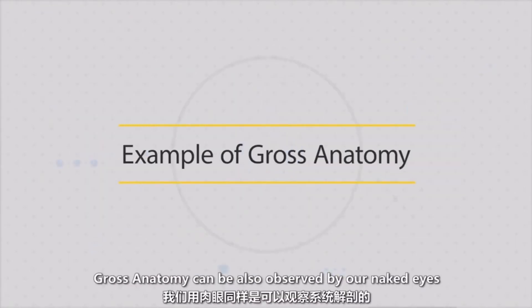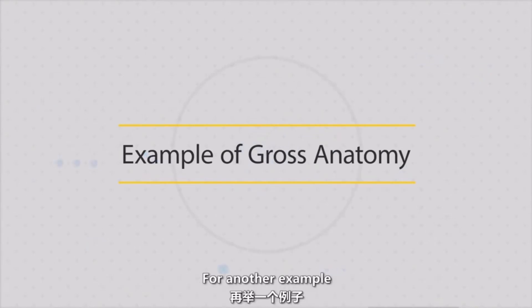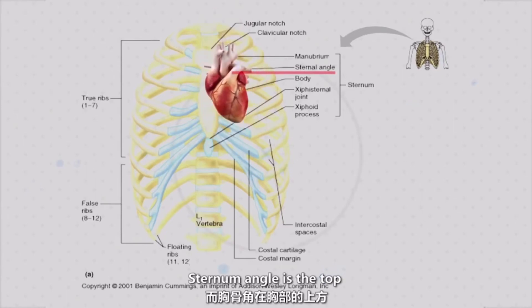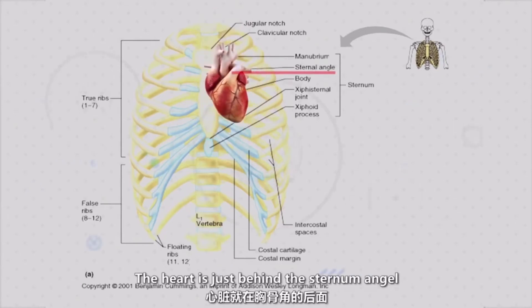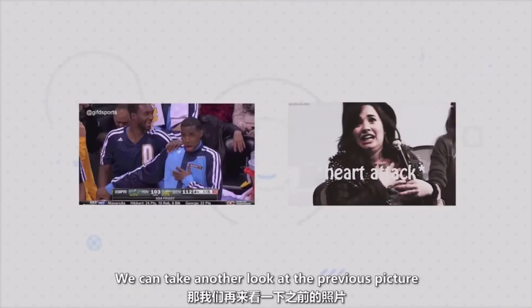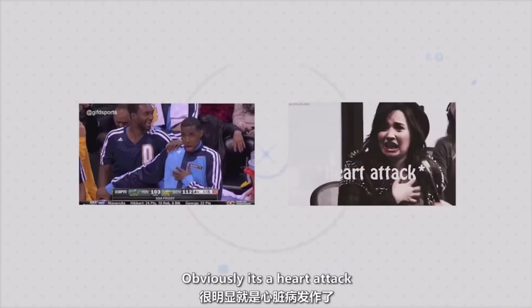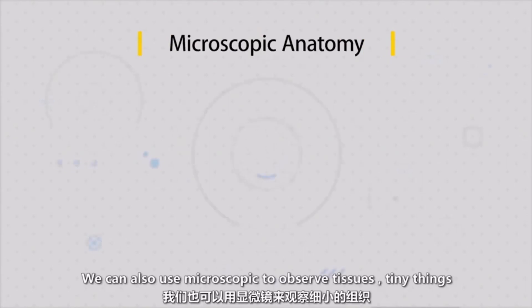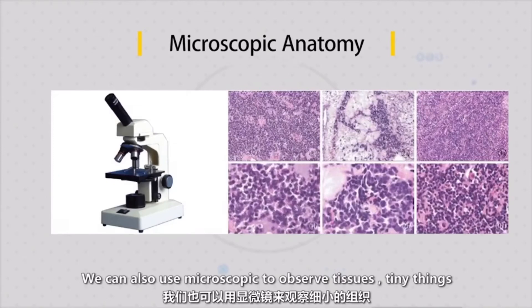In gross anatomy we also observe with the naked eye. For another example, the sternal bone — the chest bone. We have the sternal angle. The sternal angle is at the top of the heart; the heart is just behind the sternal angle. So now looking at that earlier picture, we know it's a heart attack. We can also use macroscopic methods to observe structures.